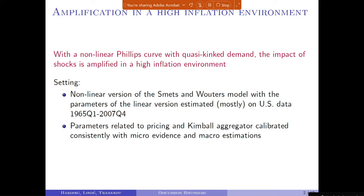The setting is a version of the Smets-Wouters model solved nonlinearly. The parameters of the linear version are estimated mostly on U.S. data between 1965 and 2007, excluding the great financial crisis periods as well as the pandemic. Some parameters related to pricing and the Kimball aggregator are updated by calibrating or estimating separately to be consistent with micro evidence and macro estimations.